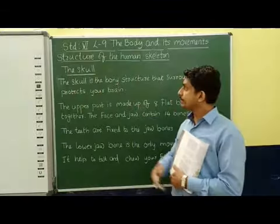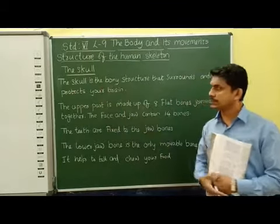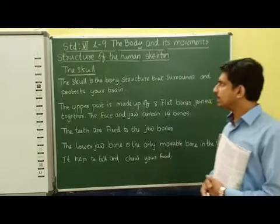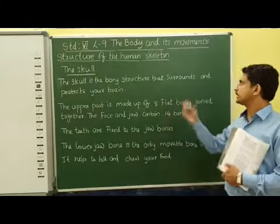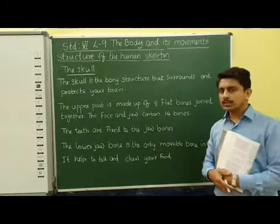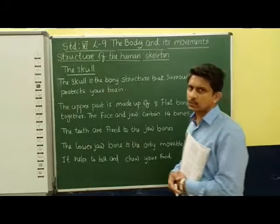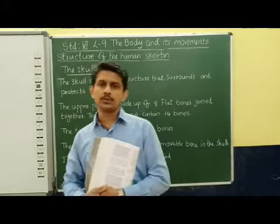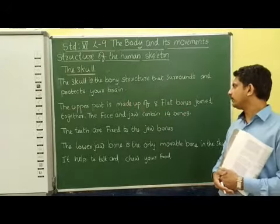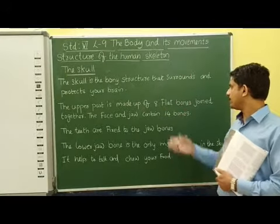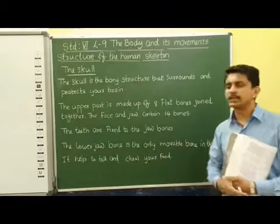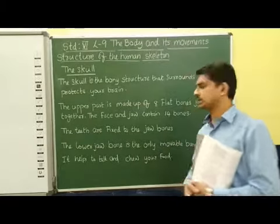Here we are going to discuss the first part, that means the skull. The skull is the bony structure that surrounds and protects your brain. The skull is like a dome which will protect your brain. The upper part is made up of eight flat bones joined together. The face and the jaw contain 14 bones.